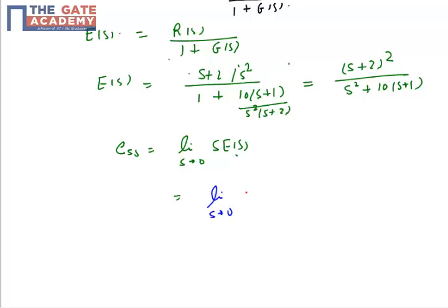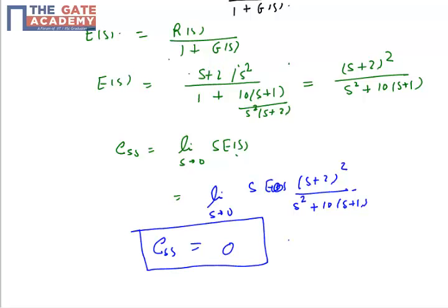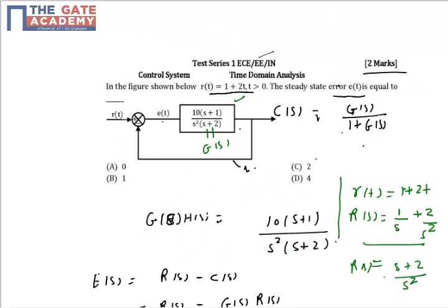Just put the expression for E(s), which is s times E(s), which is (s+2) whole square upon s squared plus 10(s+1). Put s equal to 0. This clearly turns out as 0, so the steady state error for this function is equal to 0.